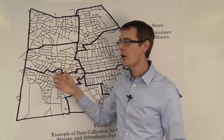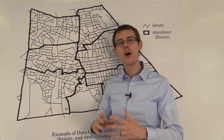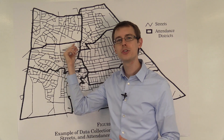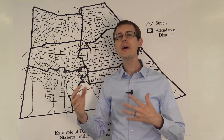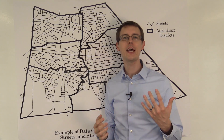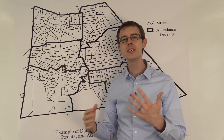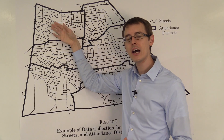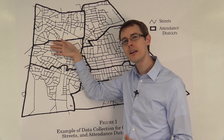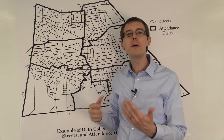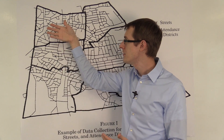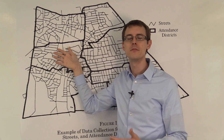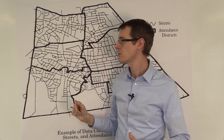The RDD assumption is that houses very close to the border are basically the same — there's no systematic difference between a house on this side and a house on that side, except that one is going to the good school and the other is going to the relatively bad school.